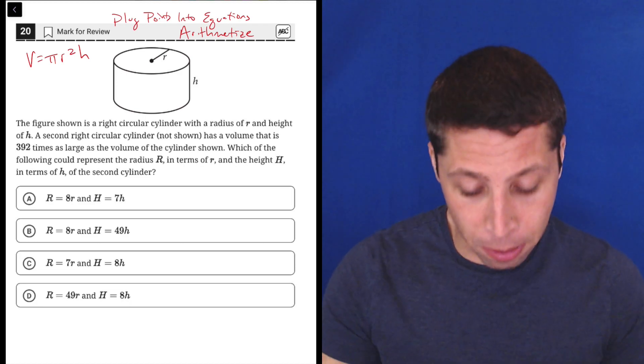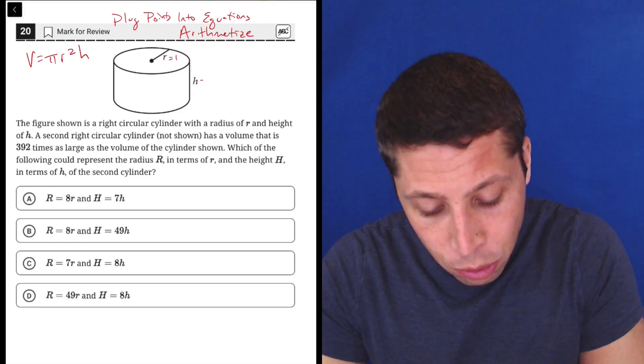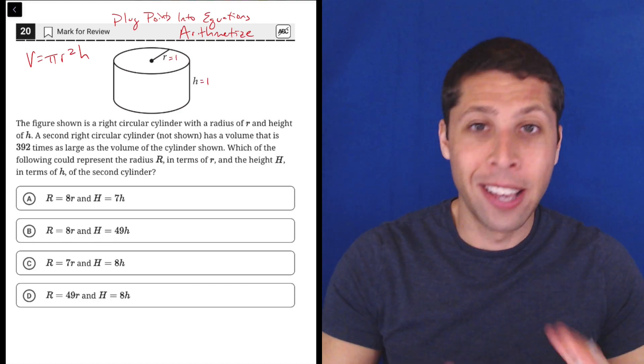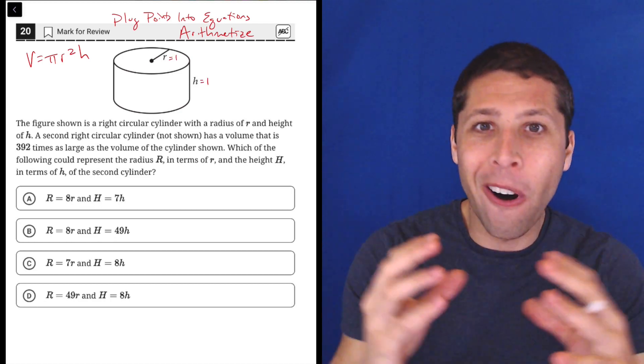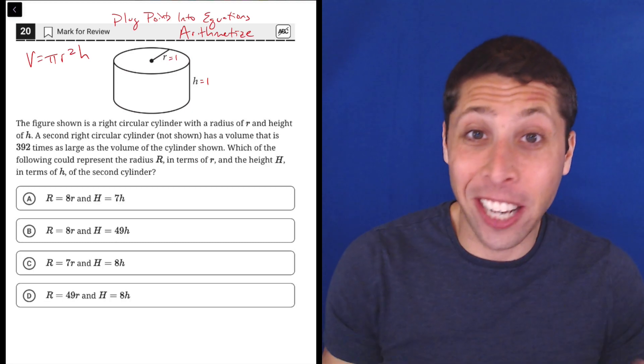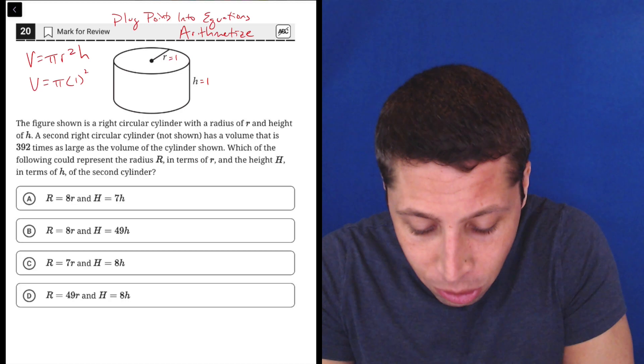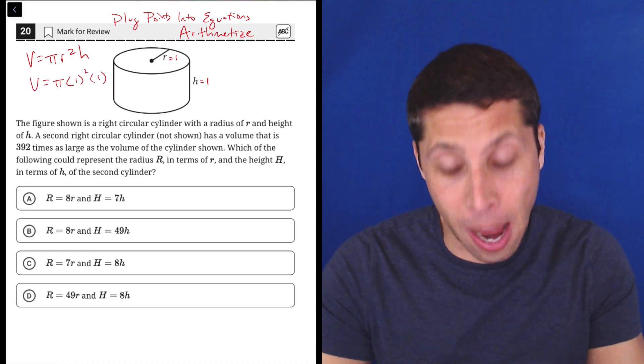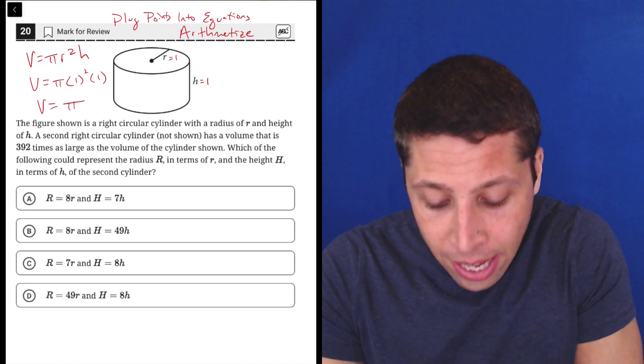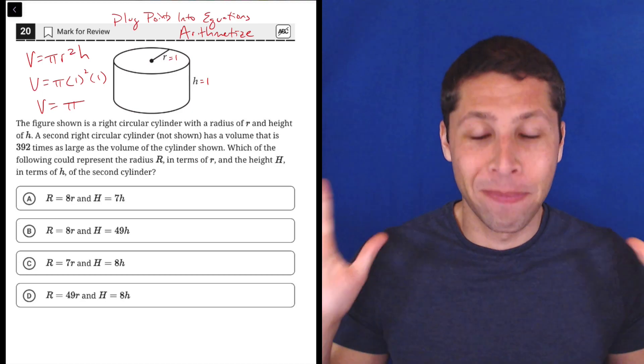So I'm going to make my life as easy as possible. Let's make this radius one and this height one. Let's make it a really nice small cylinder so that I can understand its volume very easily, because then the volume of the cylinder is one squared times one times pi. So the volume of this thing is just pi.